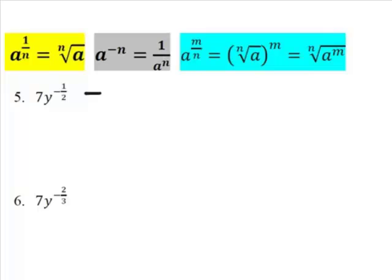The first one is 7 times, it's a negative power, so I use this rule here. a to the negative n is 1 over a to the n, where n is a half. So it's times 1 over y to the power of a half.